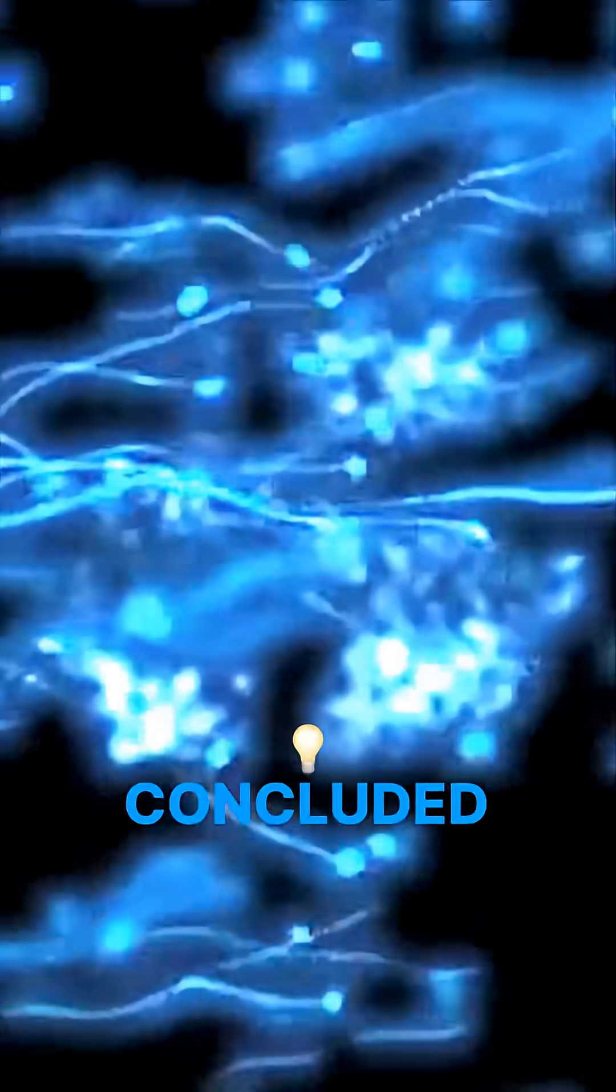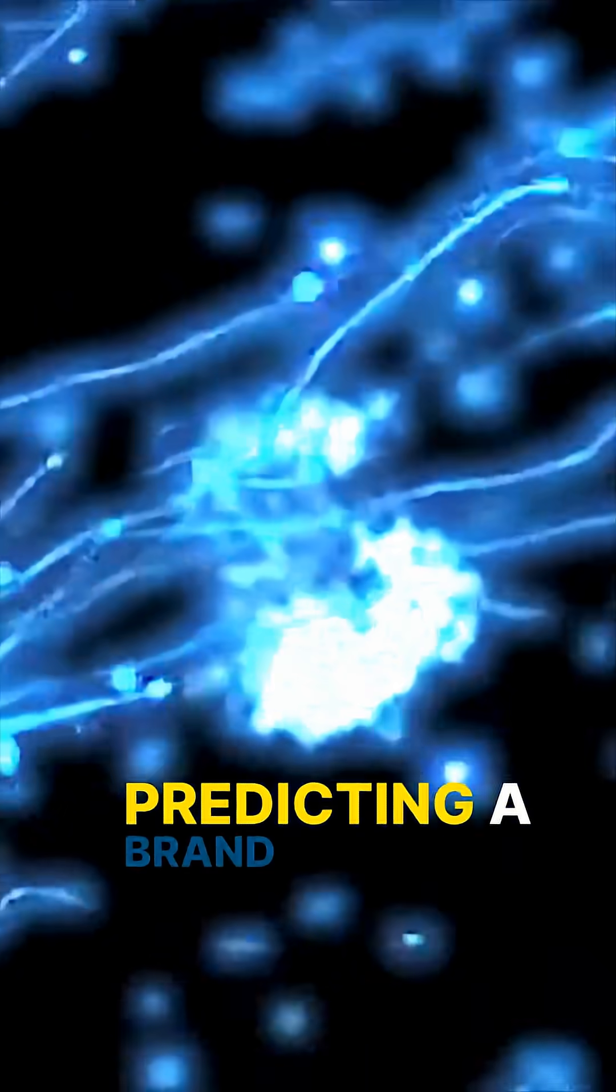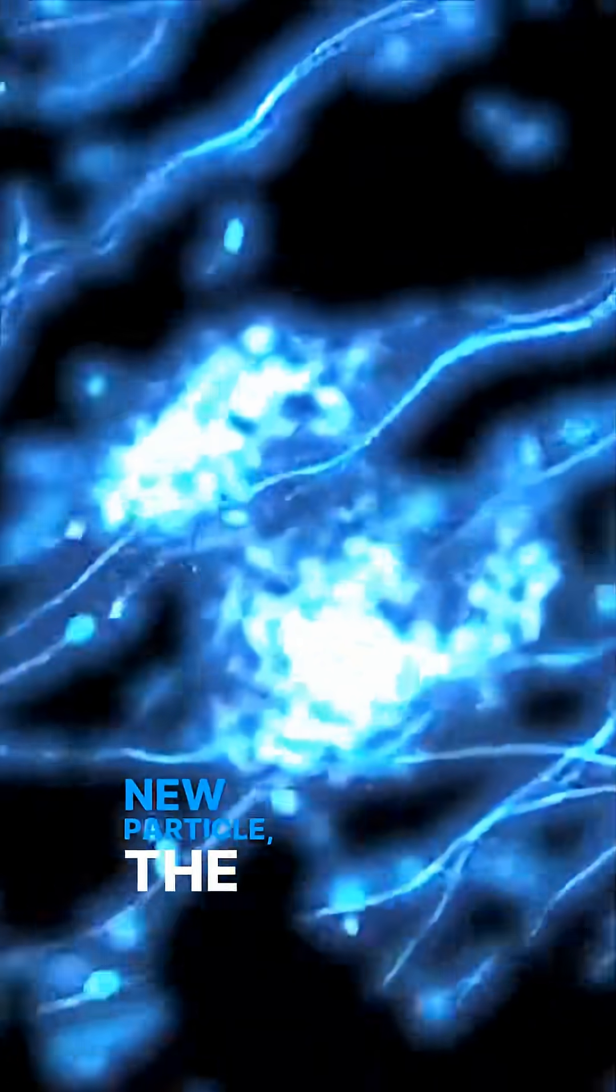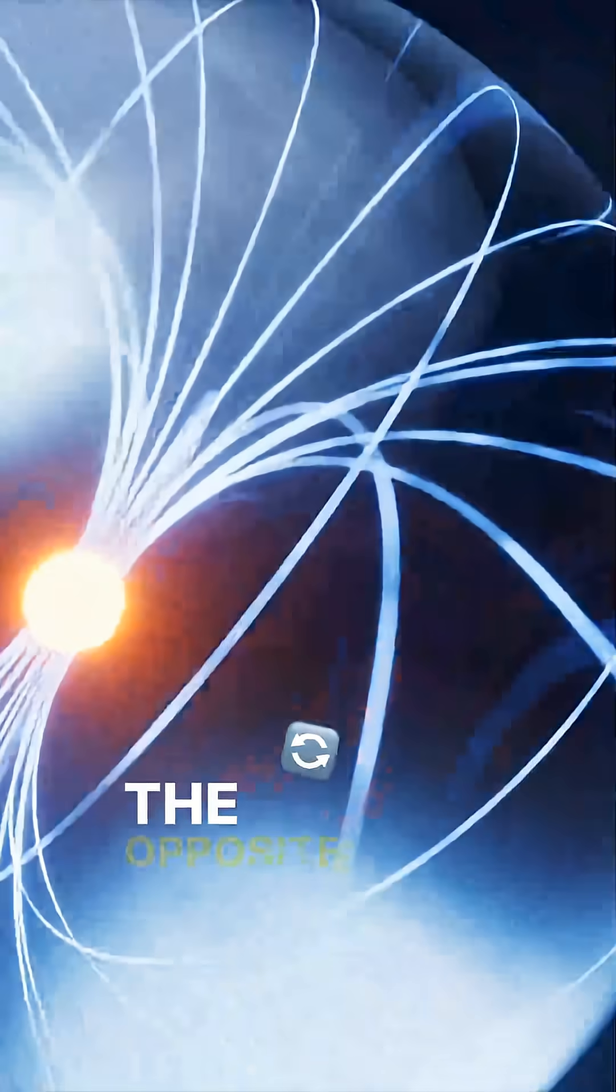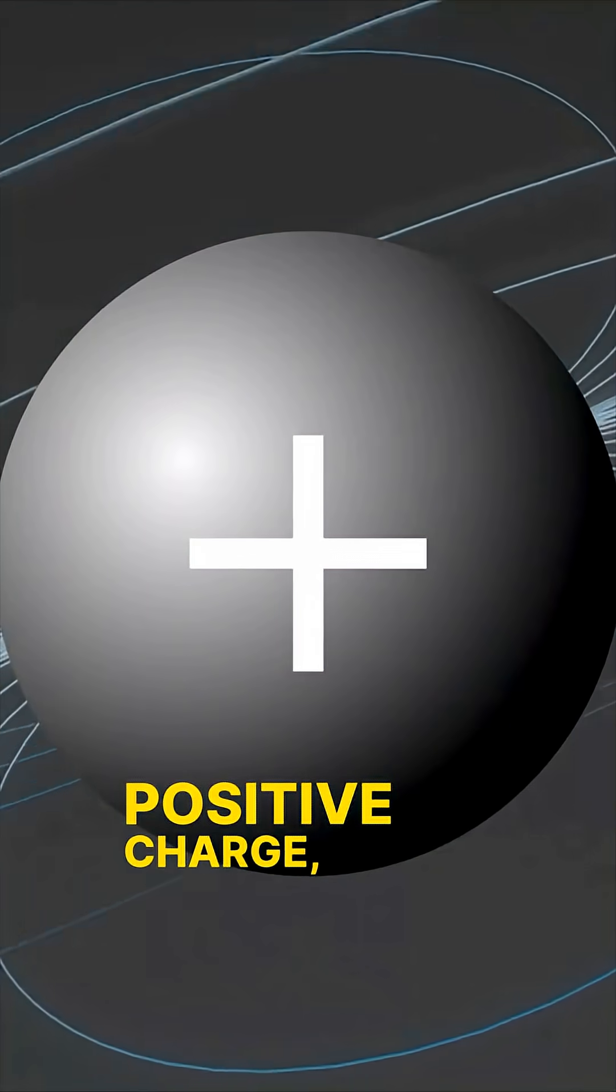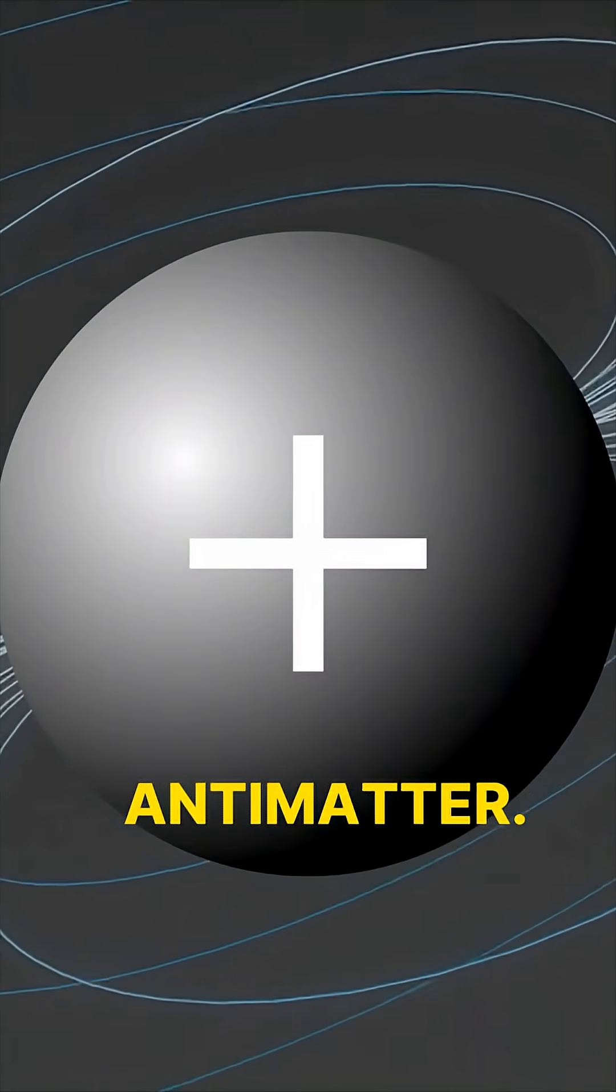He eventually concluded his equation was predicting a brand new particle, the anti-electron. This particle should have the same mass as the electron, but have the opposite, positive charge – antimatter.